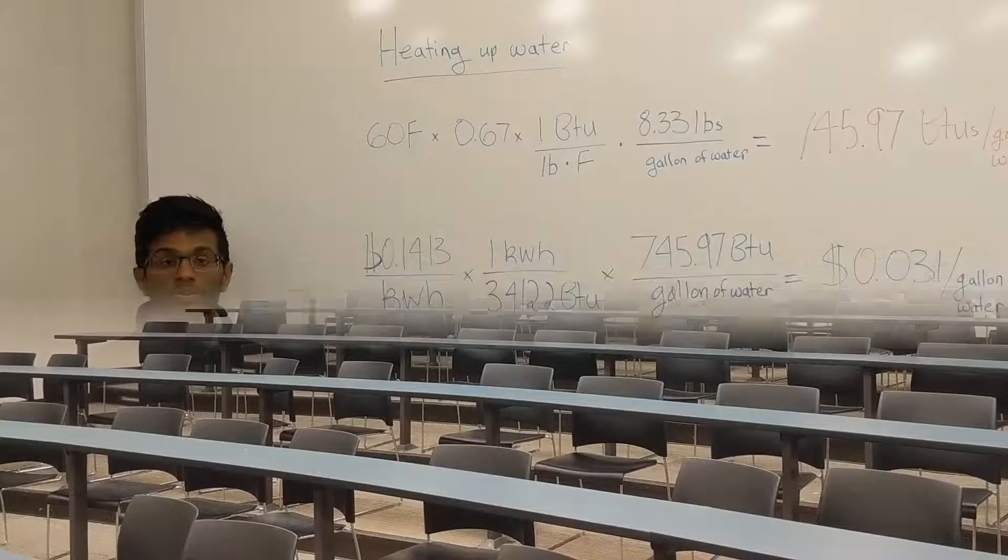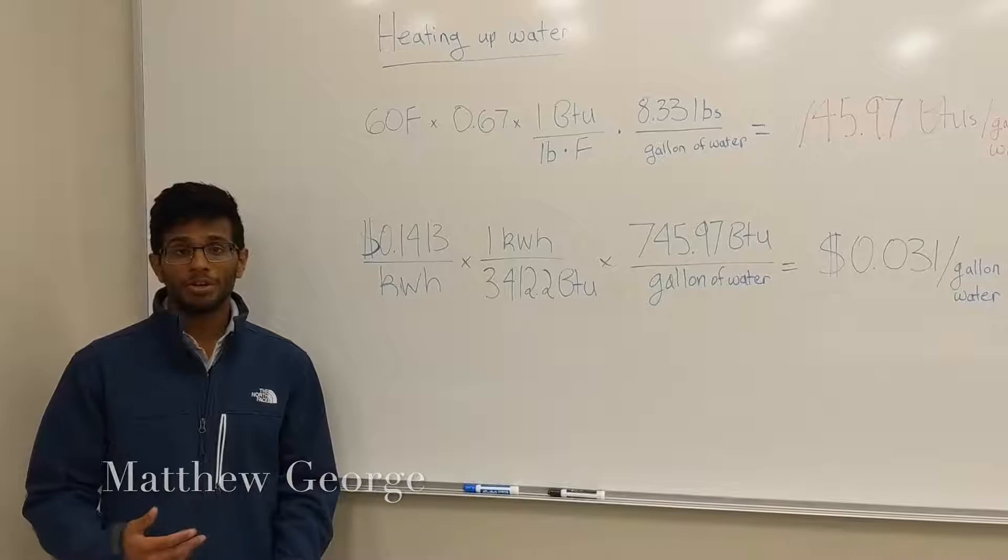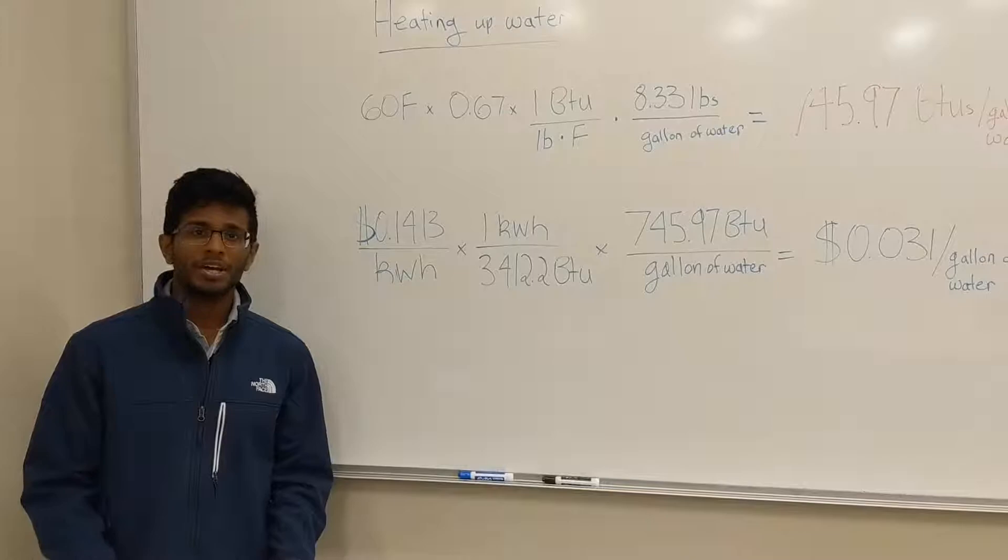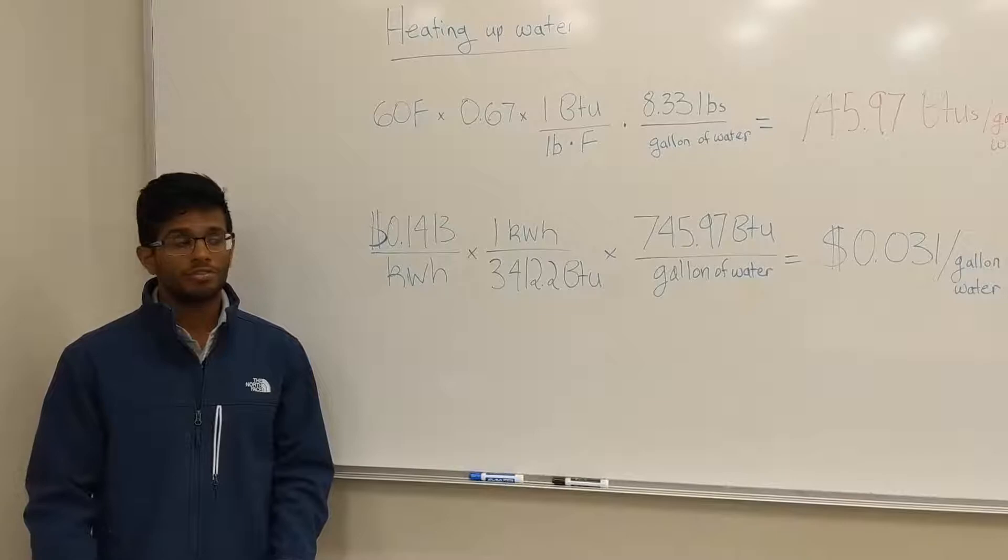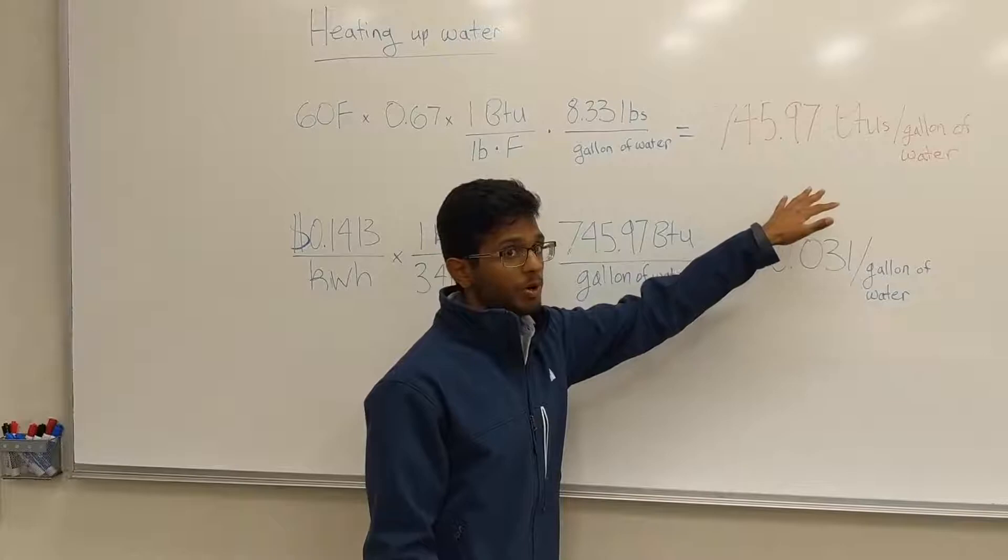So let's first look into upstream costs. To look at upstream costs, we look at the two water heaters that heat up our shower water. Most hot water heaters heat up our water by 60 degrees Fahrenheit, and it works at 67% efficiency. Now, 1 BTU is the amount of energy to raise 1 pound of water by 1 degree Fahrenheit. So using this information, we calculated that it takes around 746 BTUs to heat up 1 gallon of water.